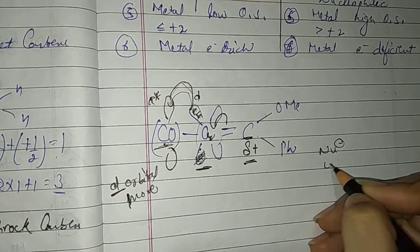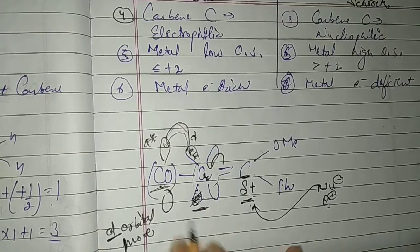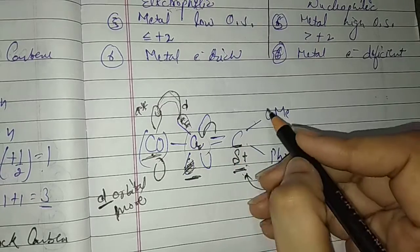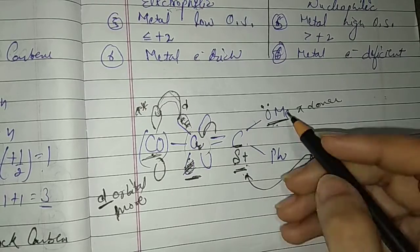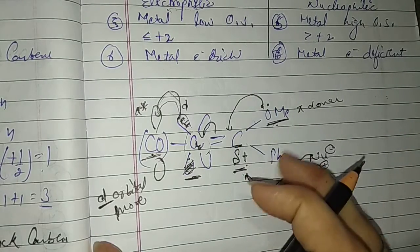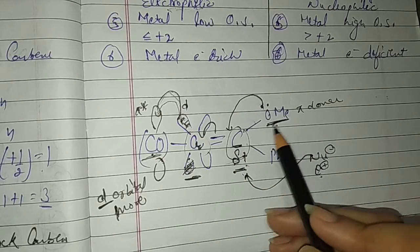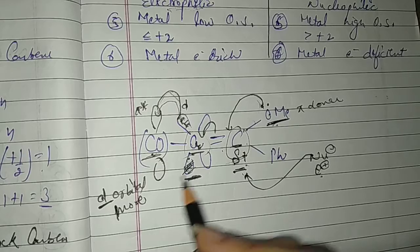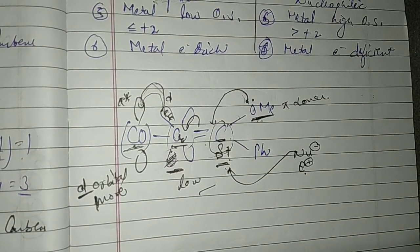The carbon is electron deficient, so nucleophiles will attack it — meaning the carbene carbon in Fischer carbene is electrophilic. The substituent is a pi-donor, which donates its electrons to the carbene carbon, helping it survive. The metal has low oxidation state, giving it more d-electrons, and this is the condition of the Fischer carbene carbon. This is our example of Fischer carbene. Now we will see Schrock carbene.